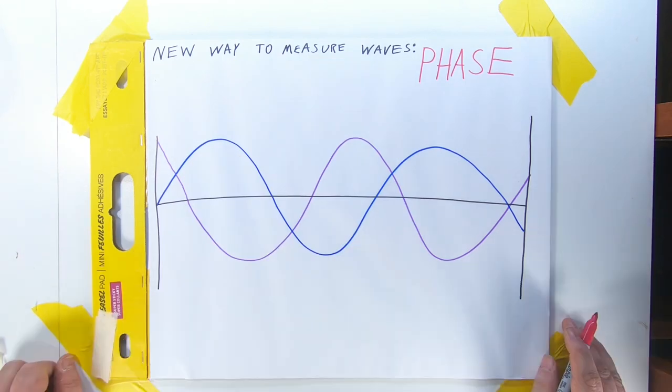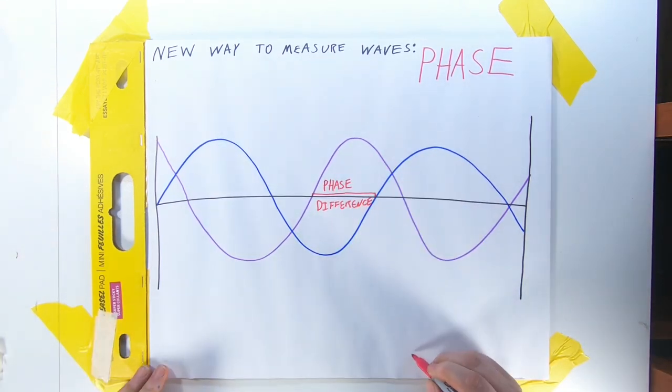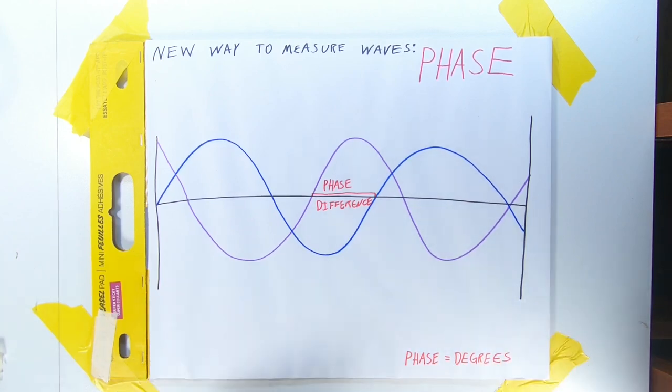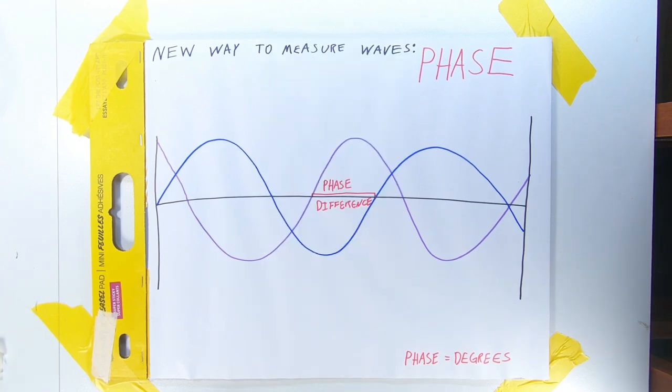The gap between when two waves cross the zero point is considered the phase difference. And when I said to some degree, that was not a turn of phrase. Phase differences are actually measured in degrees, much like an angle or a portion of a circle in geometry. Degrees are named after the inventor, Dr. Gannon Degree, who isn't from anywhere because they don't exist.